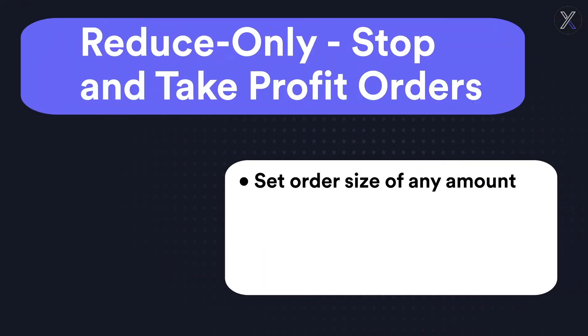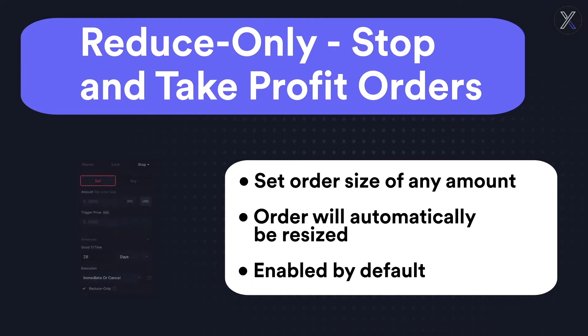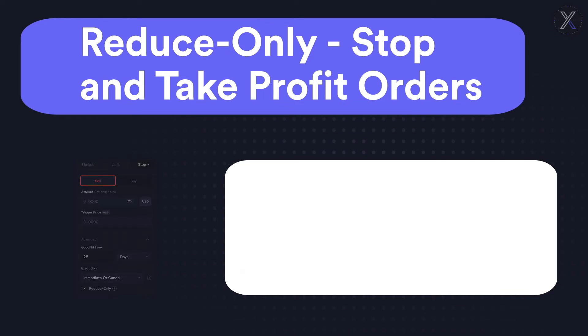For reduce only stop and take profit orders, you can set an order size of any amount. When your stop or take profit order triggers, the order will automatically be resized to your remaining position size before it fills. Reduce only is enabled by default for all stop and take profit orders.